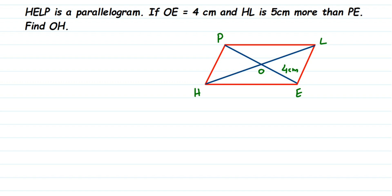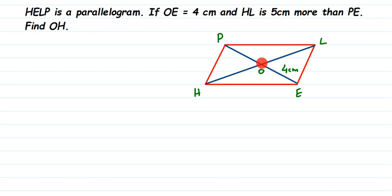In a parallelogram, the diagonals bisect each other. That means when PE and HL intersect at point O, PE is divided into two equal parts. So PO equals OE. Similarly, HL is also divided into two equal parts, so HO equals OL — the whole diagonal is bisected at O.